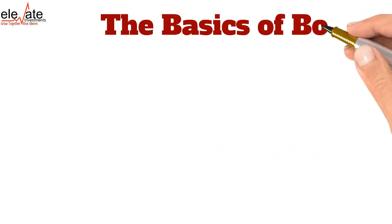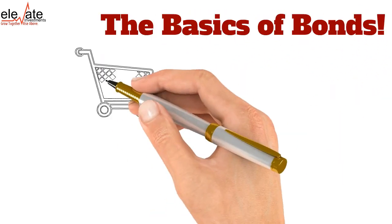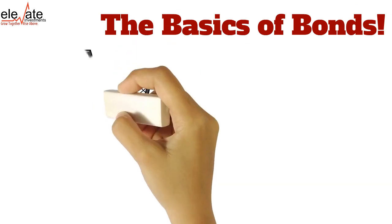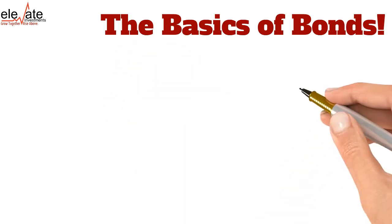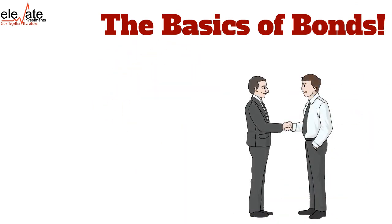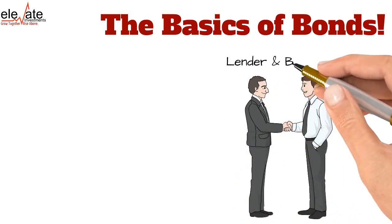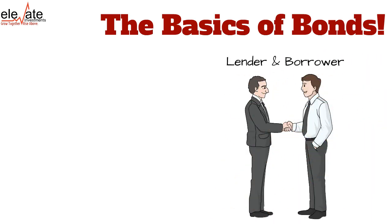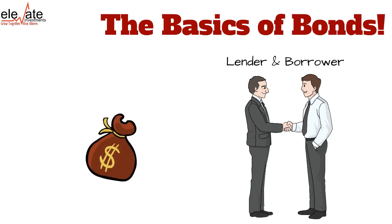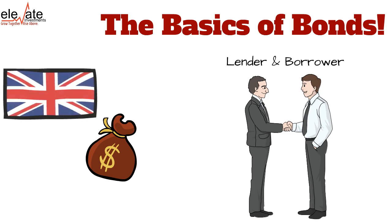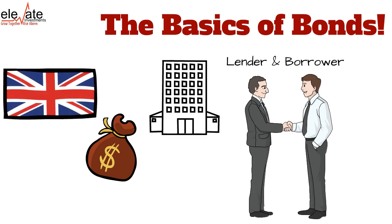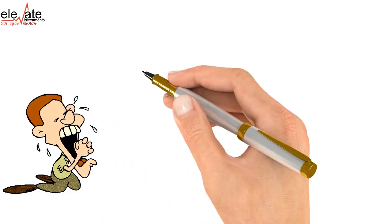In today's video I'm going to go over the basics of how bonds work and explain the bond market. A bond is a debt instrument, and like any other form of debt there's a lender and a borrower. A borrower asks for money and promises to pay it back with interest, and the lender lends money in hopes of making a profit. The bond market is essentially a market where organizations such as countries and corporations ask for money to engage in their operations.